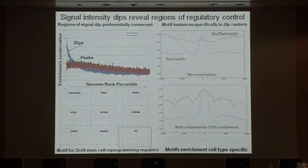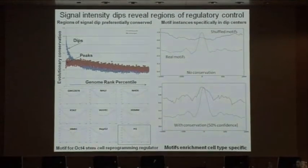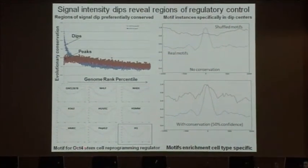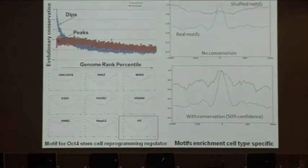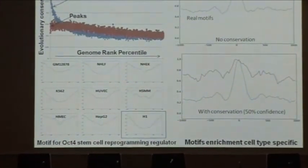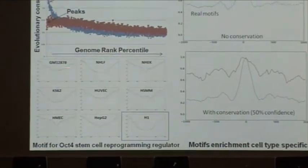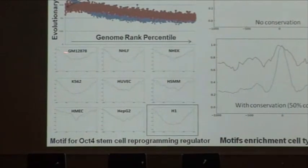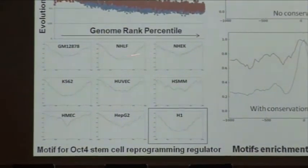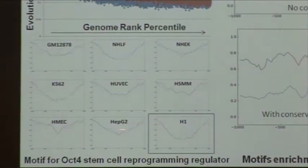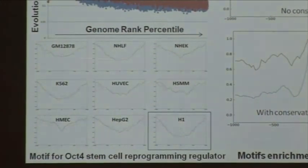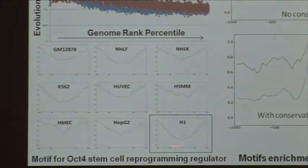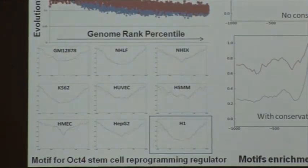And lastly, those dips are in fact cell type specific. If you look at the motif for OCT4, one of the four major reprogramming factors for embryonic stem cells, what you can see is that there's no signal associated with dips for the motif of OCT4 for any of the cell types, except for H1 embryonic stem cells, where the factor is expected to be active.